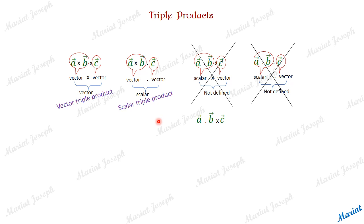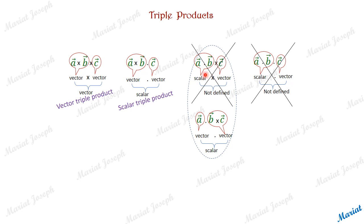One more thing to notice: in the third case, A, B, C with one dot and one cross — if we had done B cross C first, that gives a vector. A is already a vector, so vector dot vector is possible and results in a scalar. So if priority is given to the cross product first in the expression A dot B cross C, it is meaningful and will become a scalar triple product with a valid value.